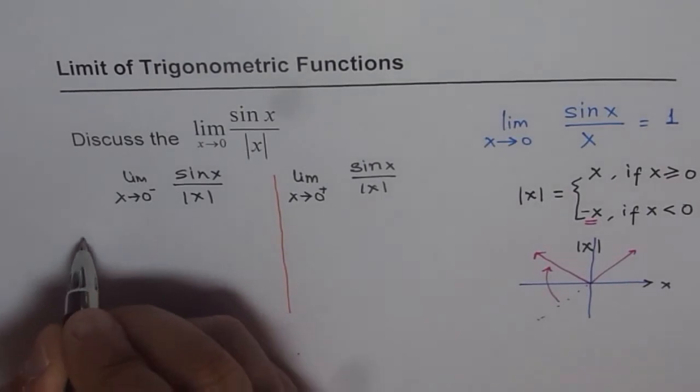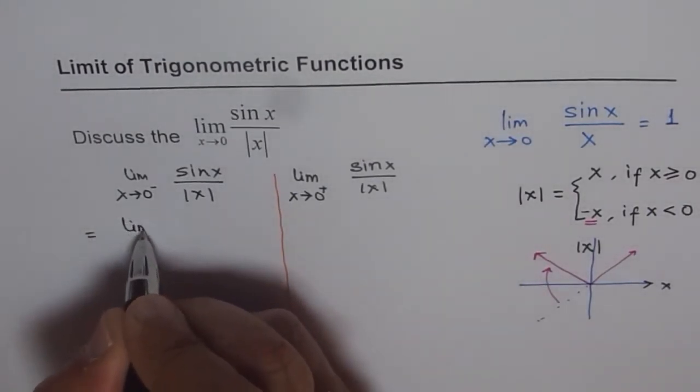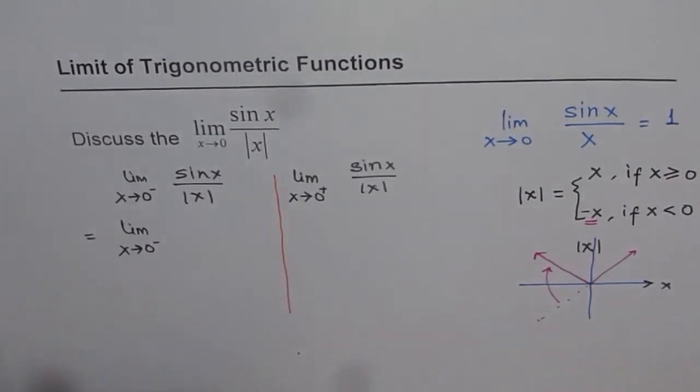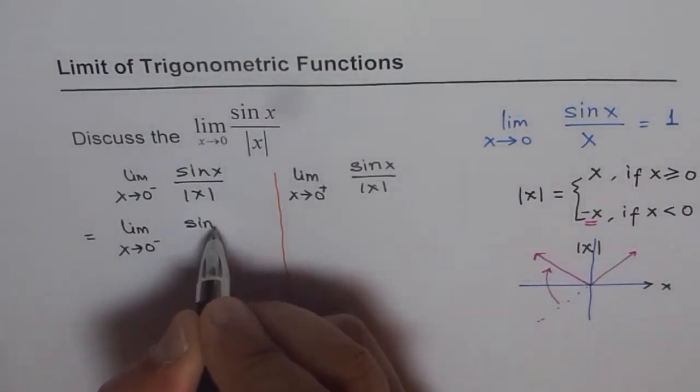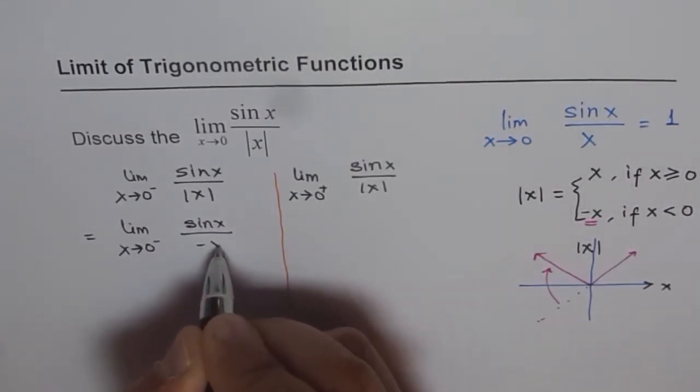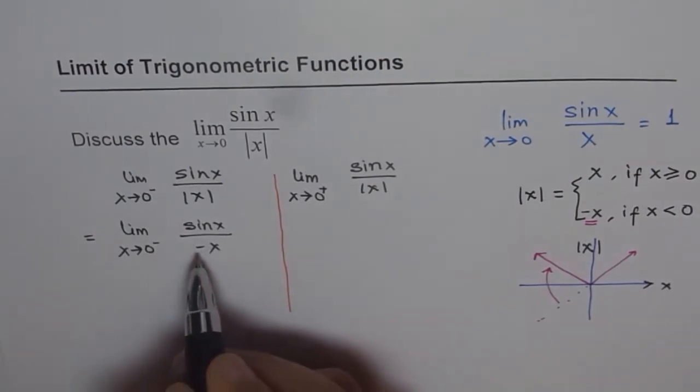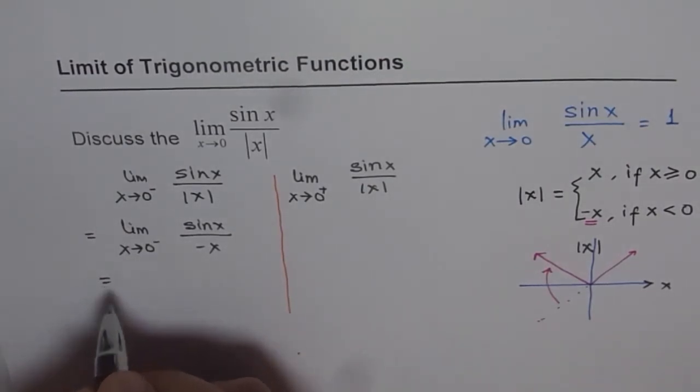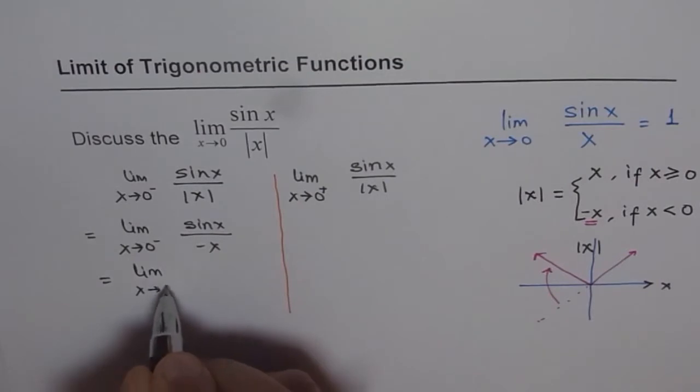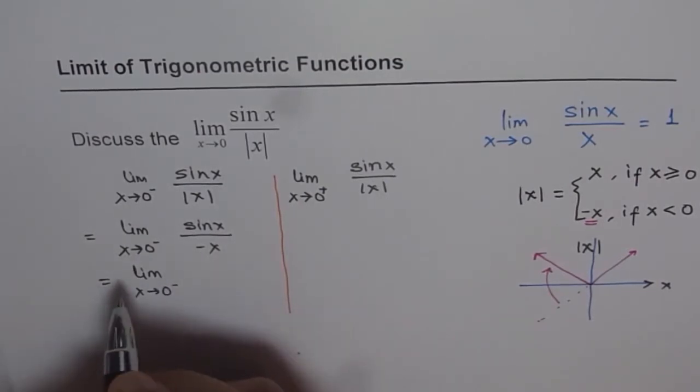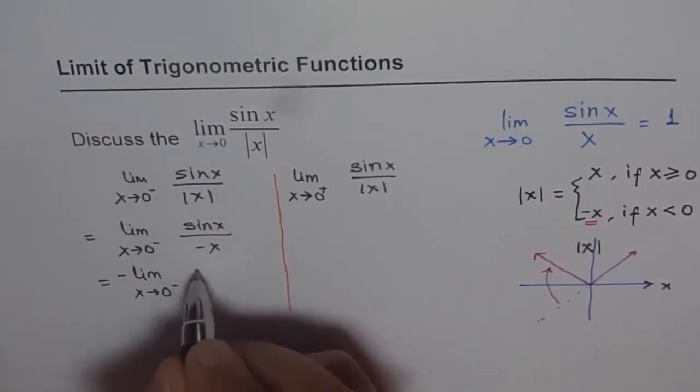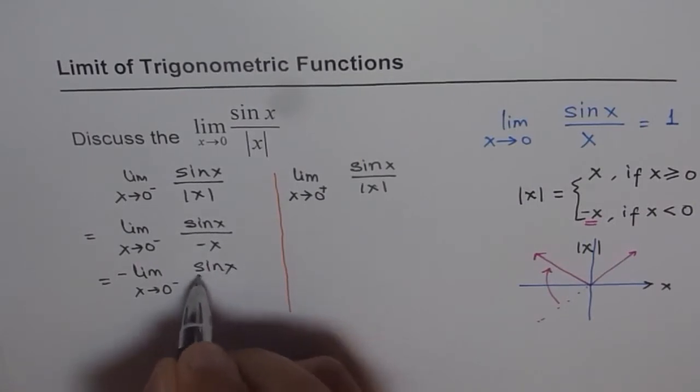So, we will write this as equal to limit x approaching 0 from left side is sin x over minus of x. And I can take this minus outside and I get what? I get limit x approaching 0 from negative side. Taking this minus outside makes it minus sin x over x.